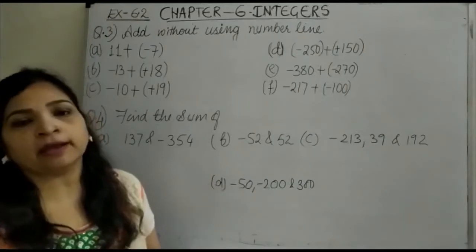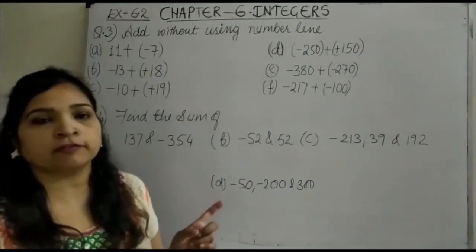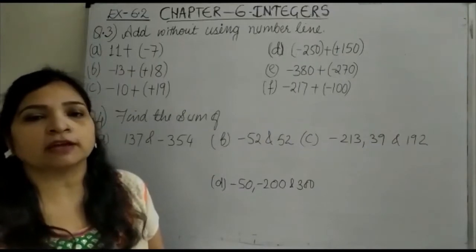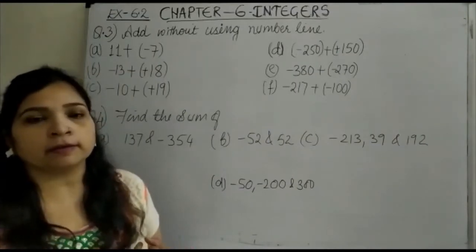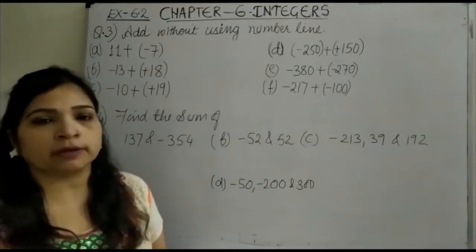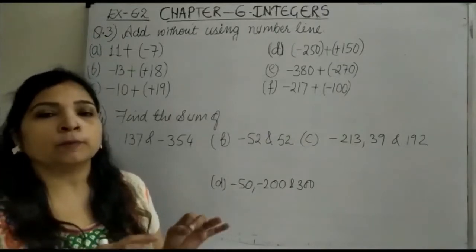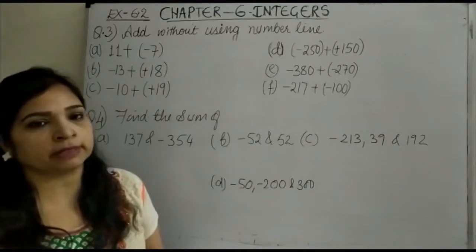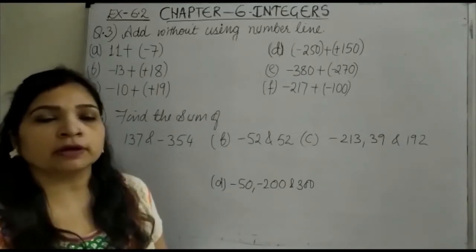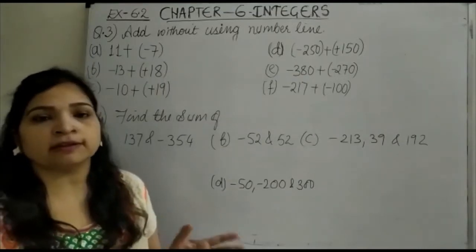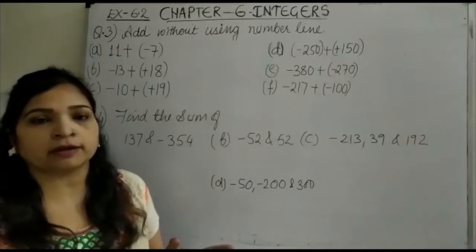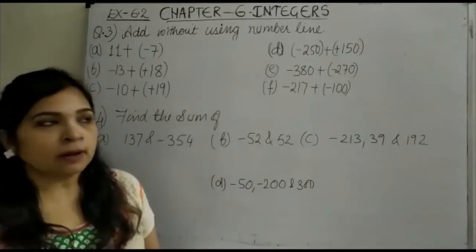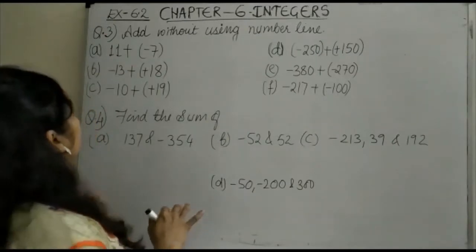If you are adding a positive and a negative integer, you subtract and put the sign of the bigger number. Plus and minus always gives minus, and the sign will be of the bigger number. If two integers both have a minus sign and you add them, you add and the sign will be minus.